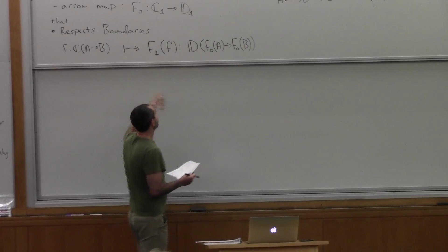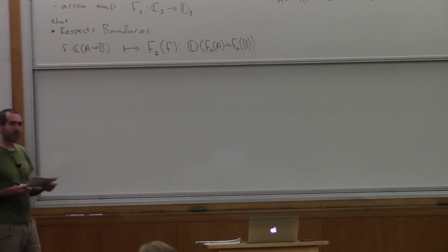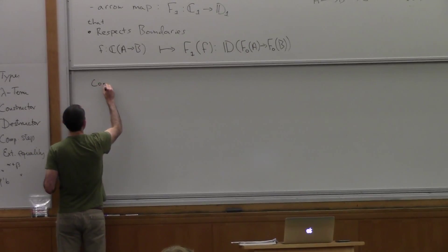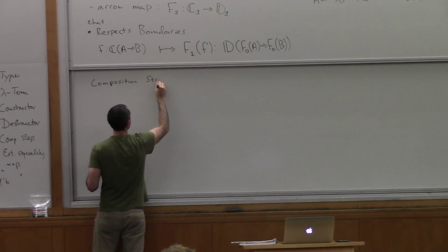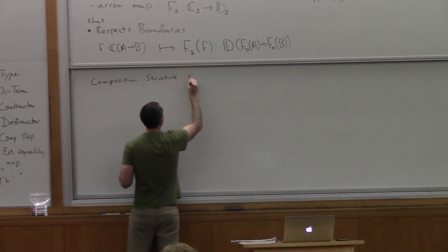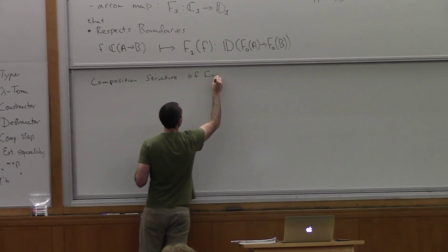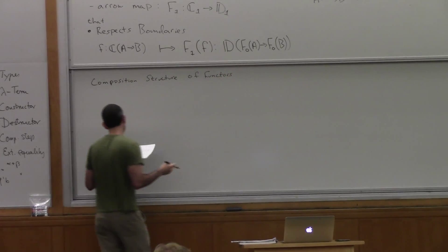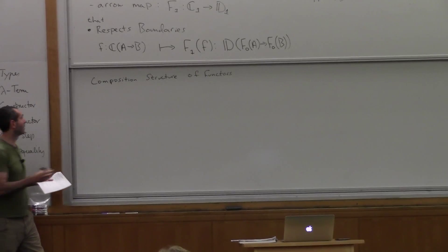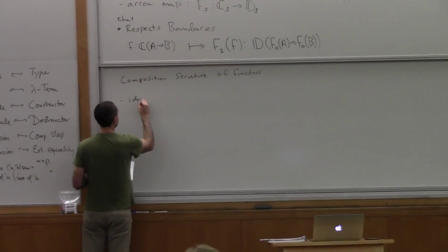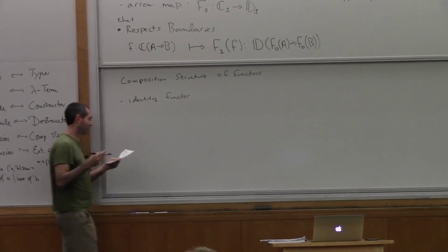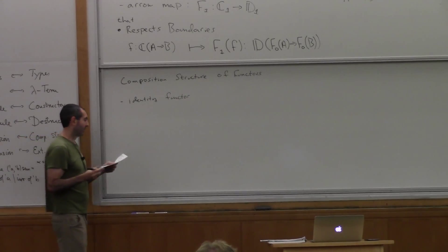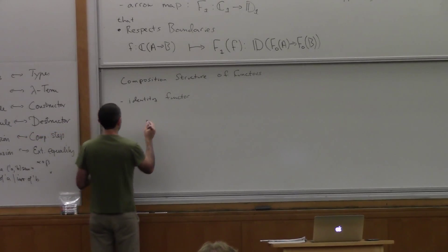So that's where we were. Since we want functors to be morphisms of categories, we have to talk about their composition structure in turn. We have the composition structure of functors. In order to specify this, I have to tell you what an identity functor is, and what a binary composition of functors is.